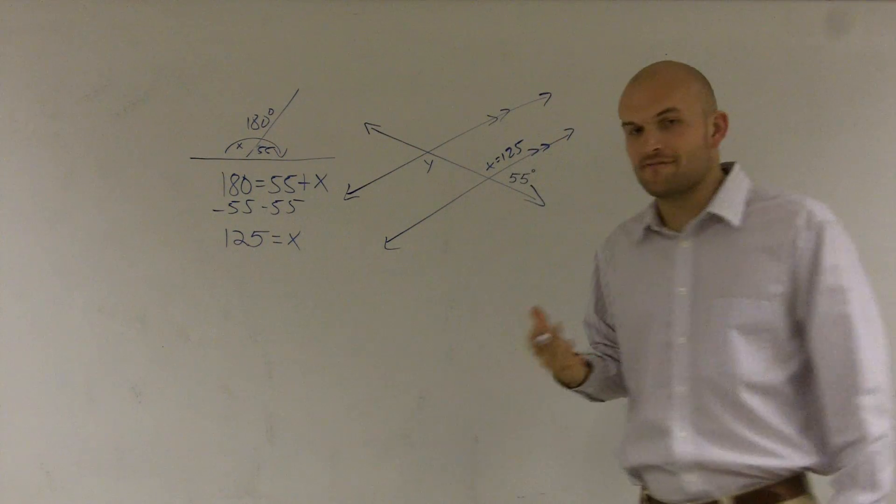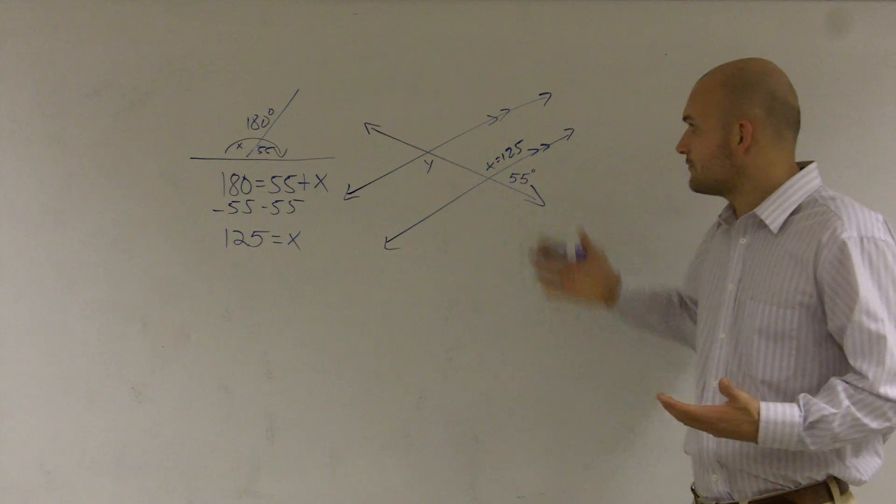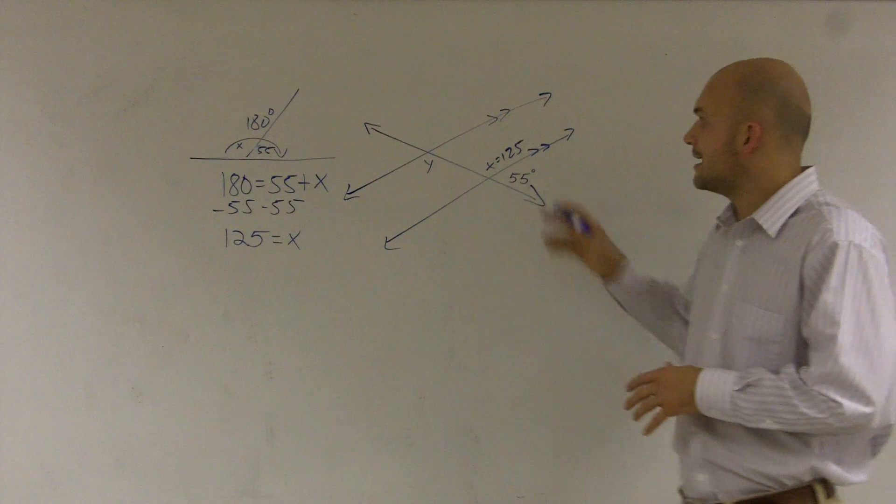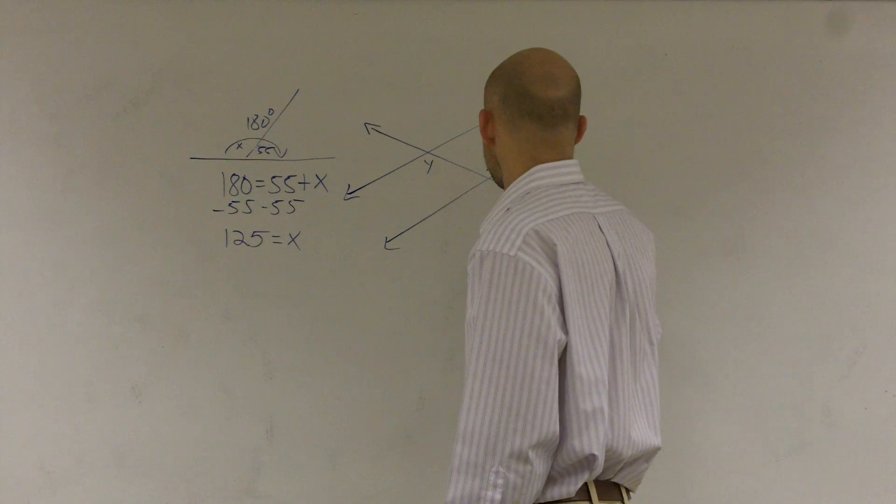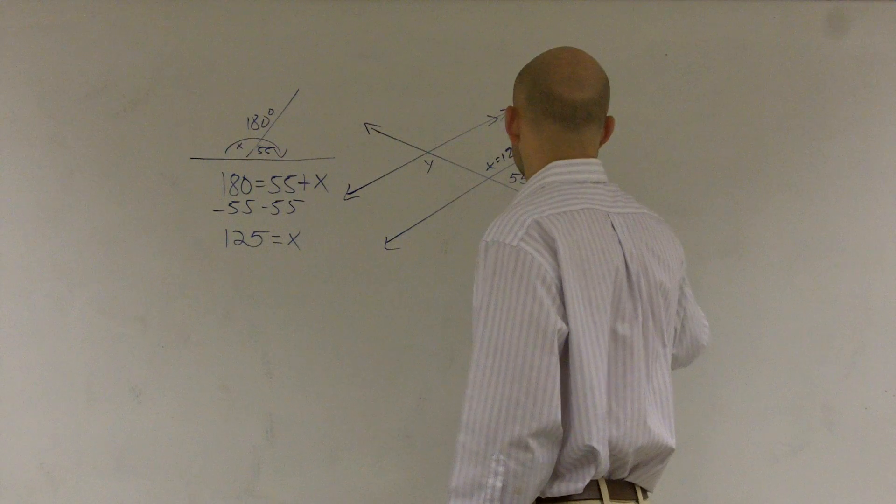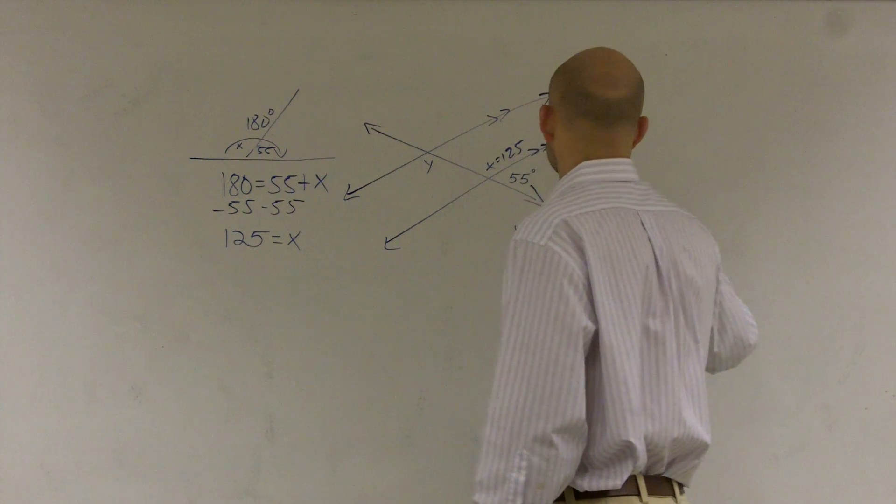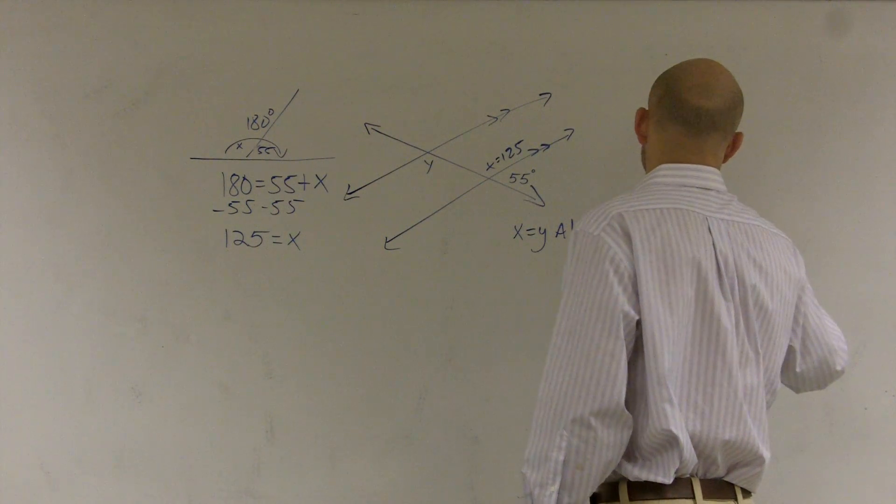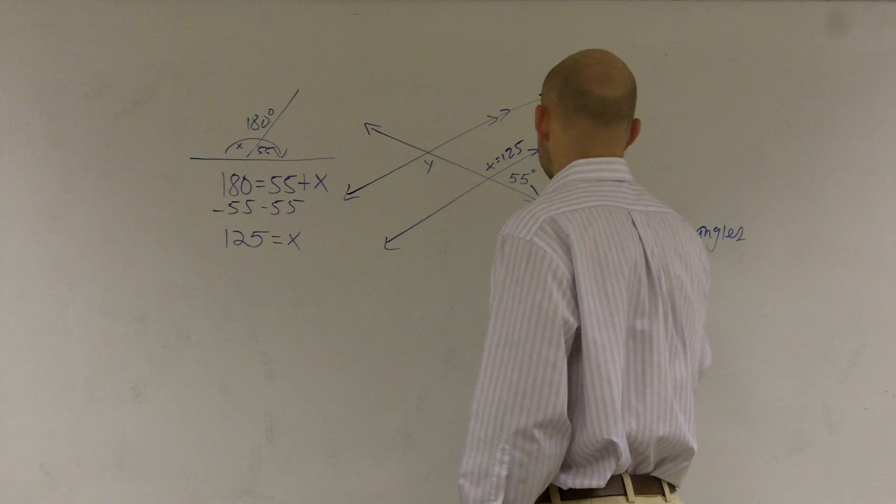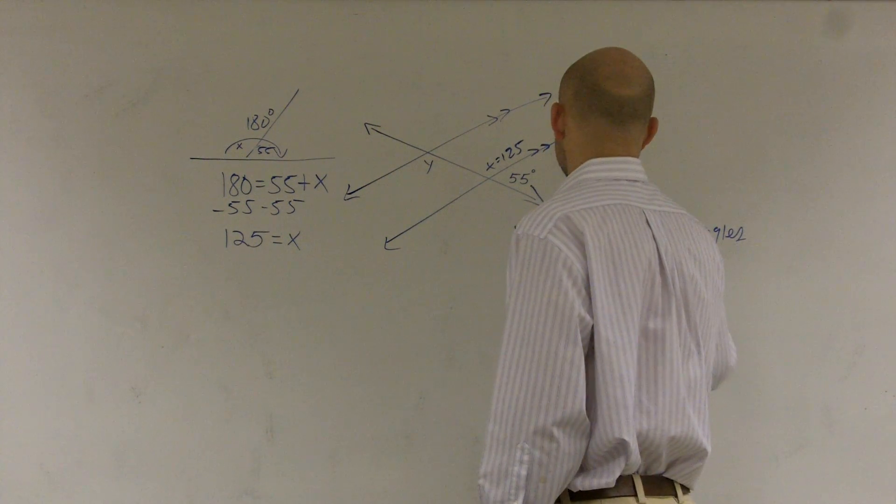Because if I have my definitions memorized for what alternate interior angles are, I now know that x and y are equal to each other. So since x is equal to y by alternate interior angles, I can say that y is equal to 125.